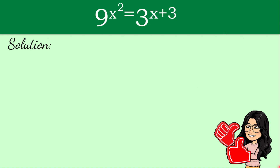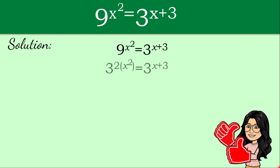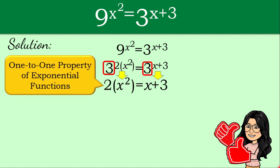Remember the tip from our first and second examples — we need to have the same base on both sides of the equation. Here we have 9, and 9 can be expressed as 3 times 3, that's 3 squared. The right side is already in base 3. So we express 9 as 3 squared and copy x squared as the exponent. Now both sides have the same base.